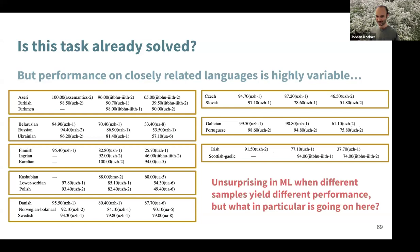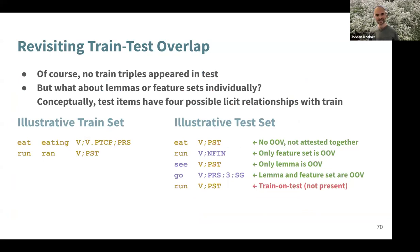Each training triple contains three items — a lemma, inflected form, and feature set. It's possible that the percentage of lemmas or feature sets that overlap between train and test is driving these results. In this illustrative example with two training items and five test items, each test item represents a different kind of overlap. For 'each past,' we've seen both the lemma and feature set, just not together. But for 'run non-finite' (the infinitive), we've seen the lemma but never the feature set. So there are different kinds of test items that we should probably evaluate independently.